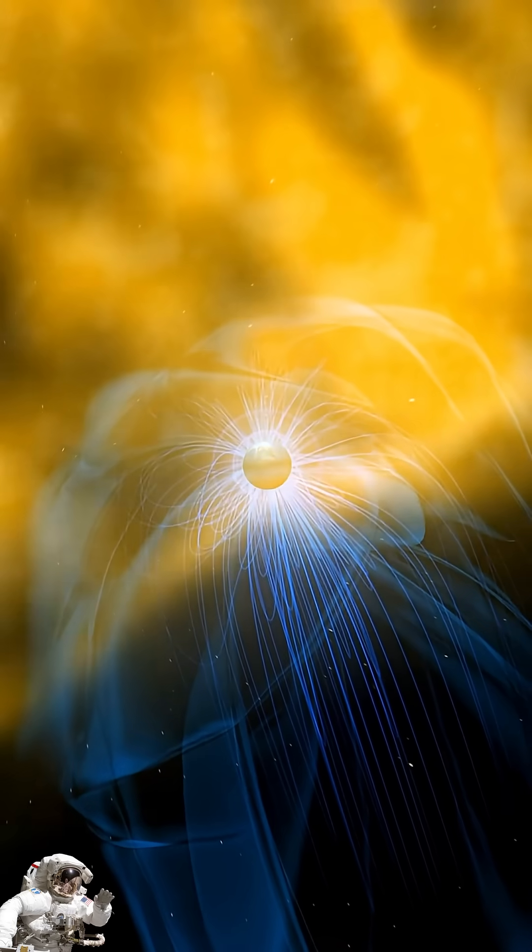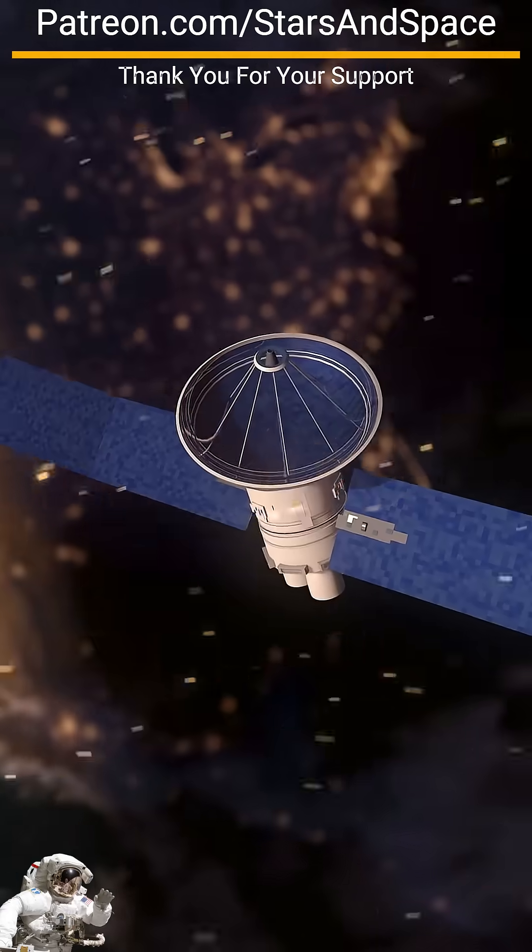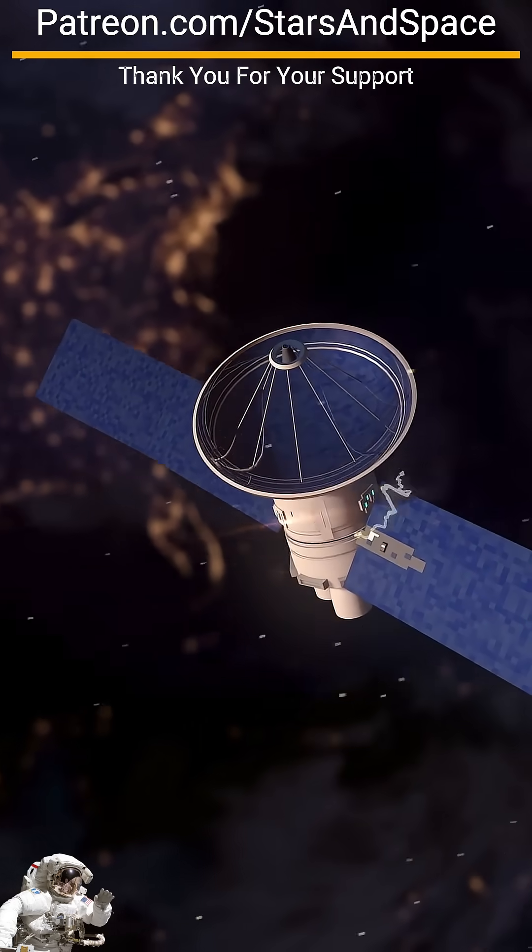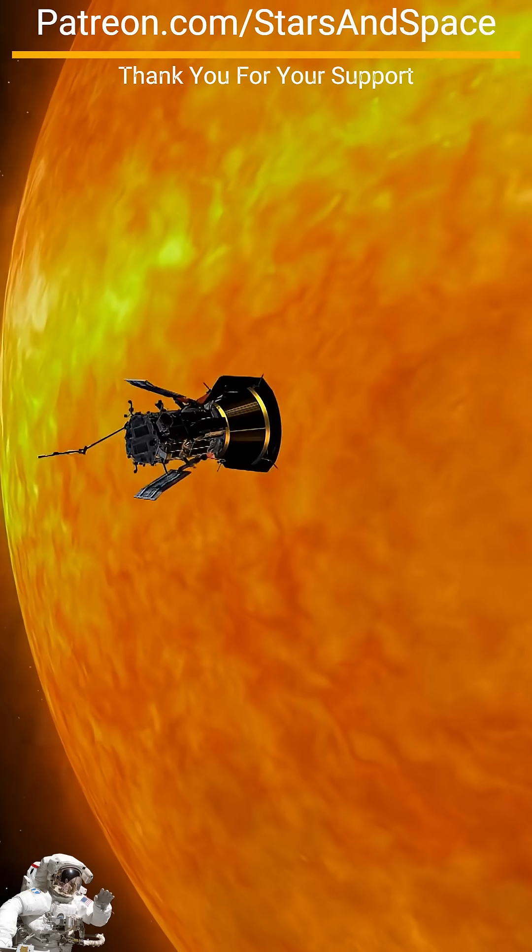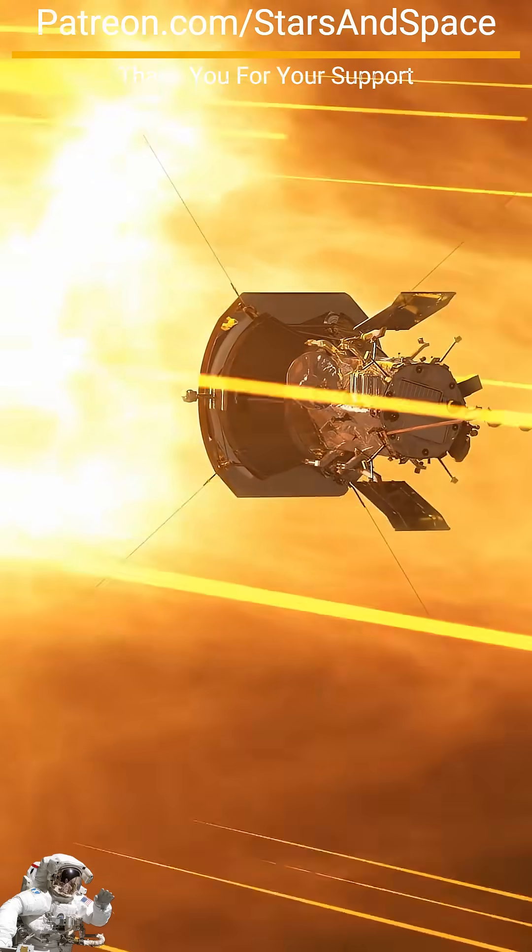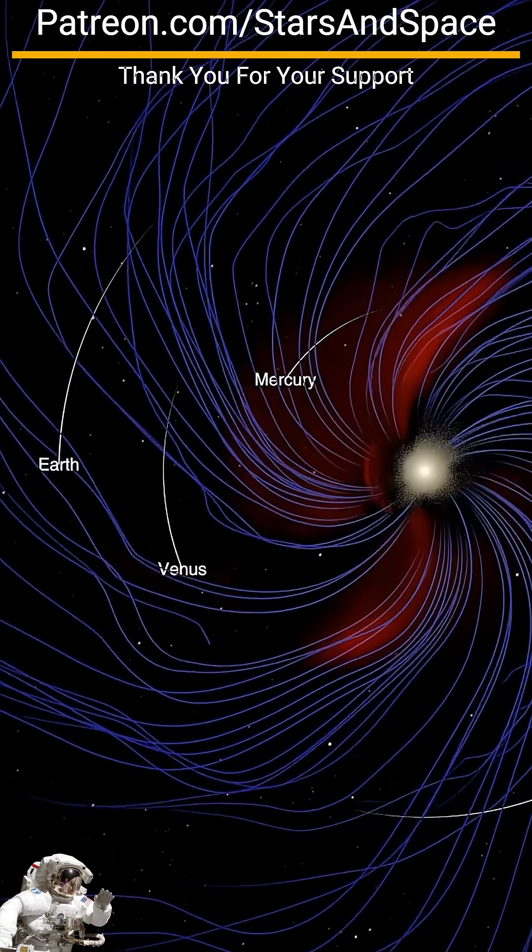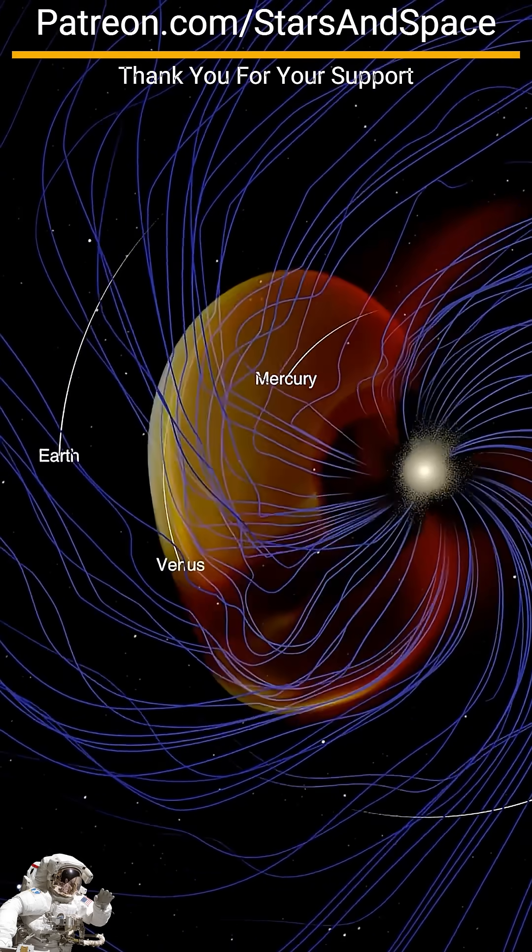That could mean the difference between a hit or miss at Earth or Mars, where solar eruptions can disrupt our satellites and communications. As Parker continues to fly around the sun, its observations will help scientists better understand the impact of space weather across our solar system.